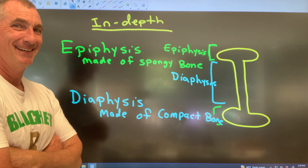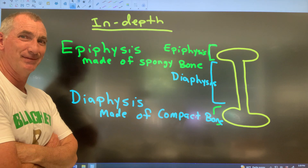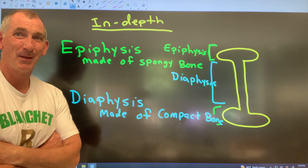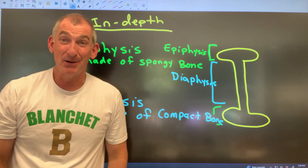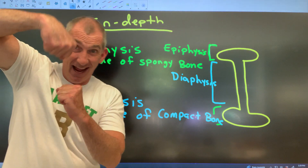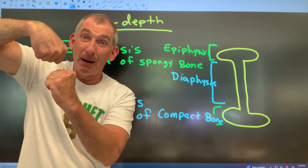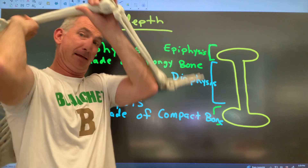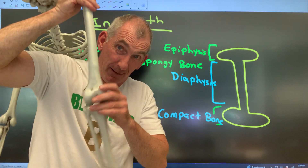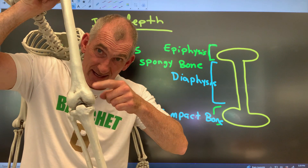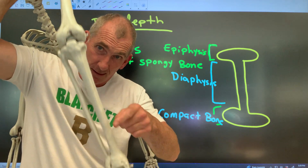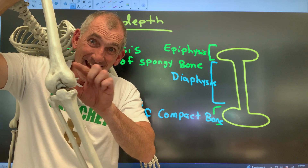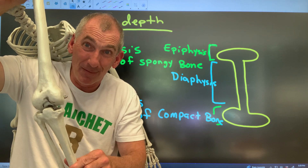You should be questioning yourself — the whole class should be thinking about questions. Good question: why are the ends of a long bone made up of spongy bone? I've got a long bone right here — this is the epiphysis, it's made up of spongy bone. Why are the two ends made up of spongy bone?